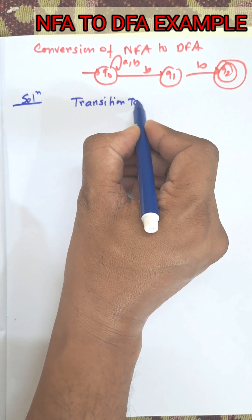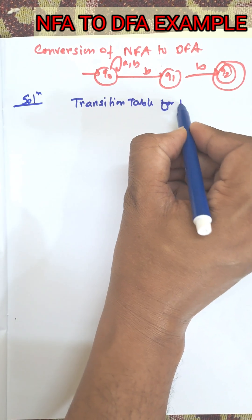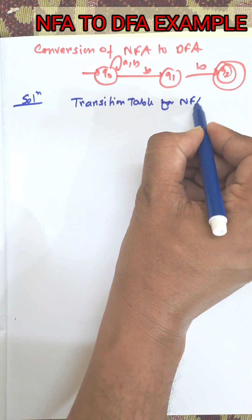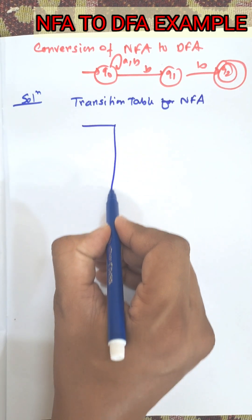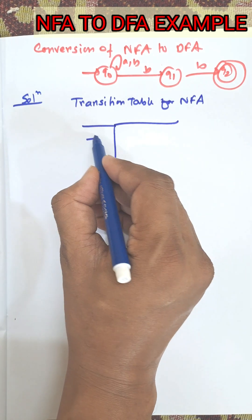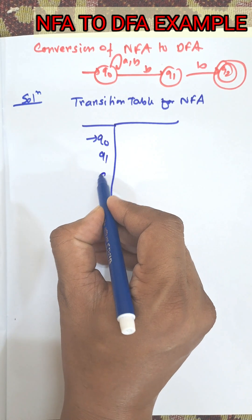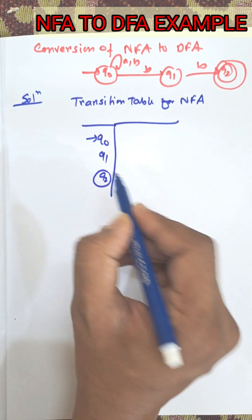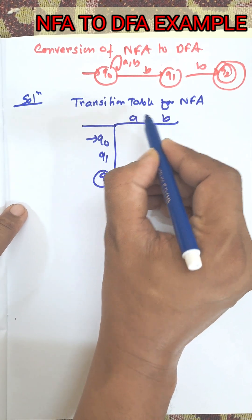Transition table for NFA. First of all there are three states. Q0 is the initial state, Q1 and Q2 is the final state. And there are two inputs A and B.